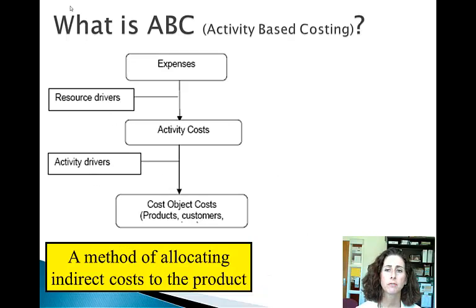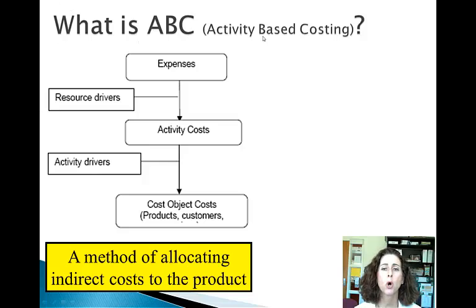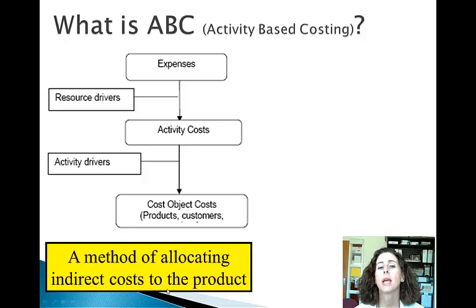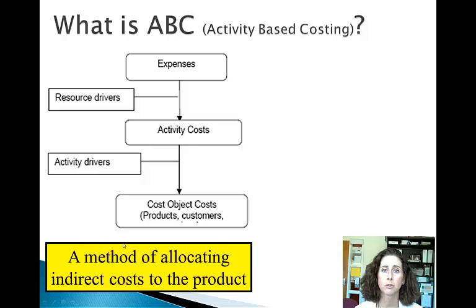So first of all, what is activity-based costing? I want to be clear in identifying that it's only a method for allocating the indirect, also called overhead cost, to the product. ABC and traditional product costing are the same in that direct material and direct labor are driven to the product the same way.